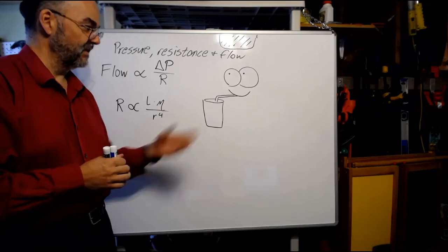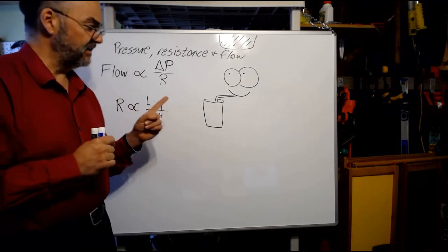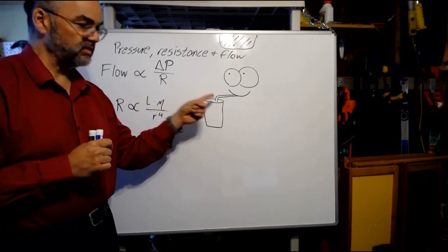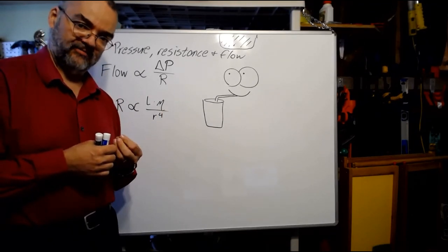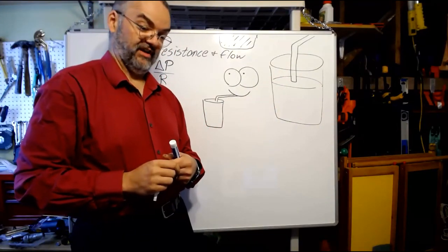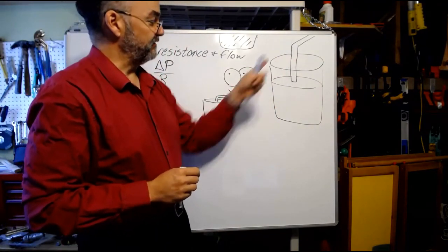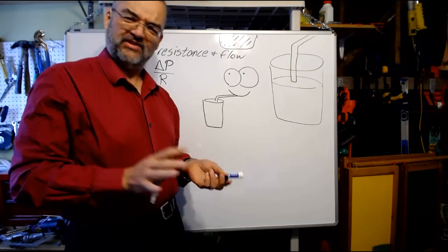Resistance r is proportional to the length of the tube times this letter eta, which is a symbol for viscosity, the thickness of the fluid, divided by the radius of the tube, raised to the fourth power. So, let's take a moment to talk about this using one of my personal favorite examples, milkshakes.